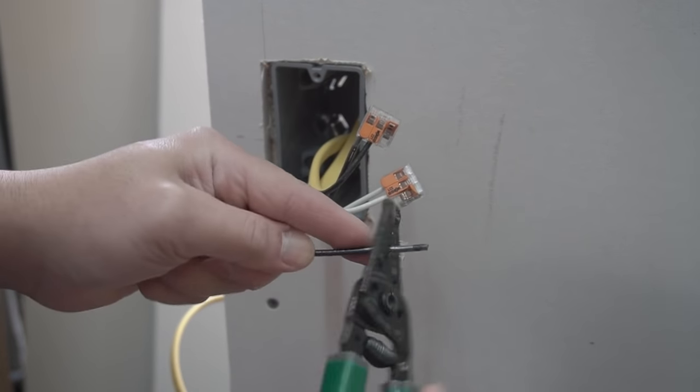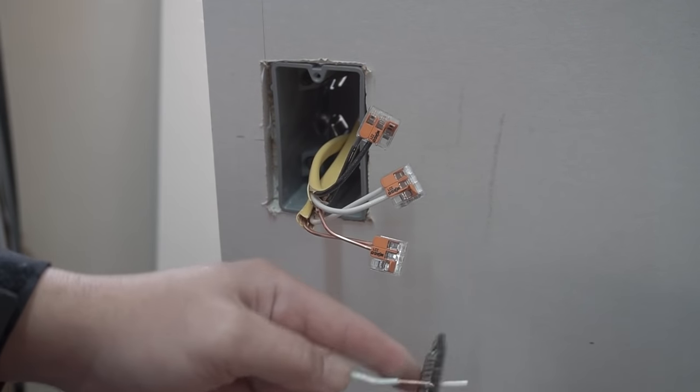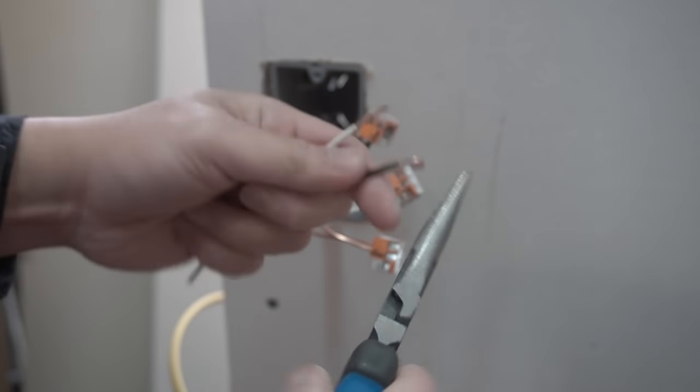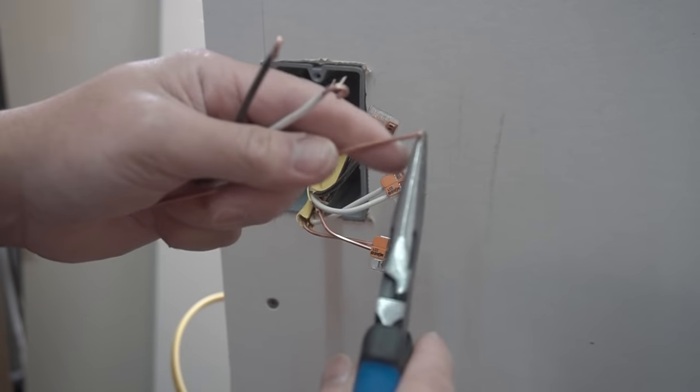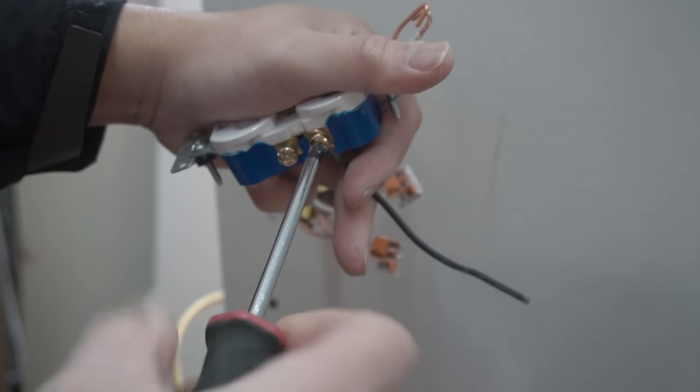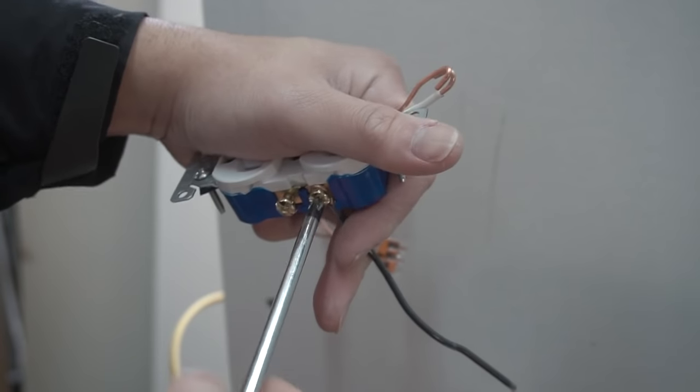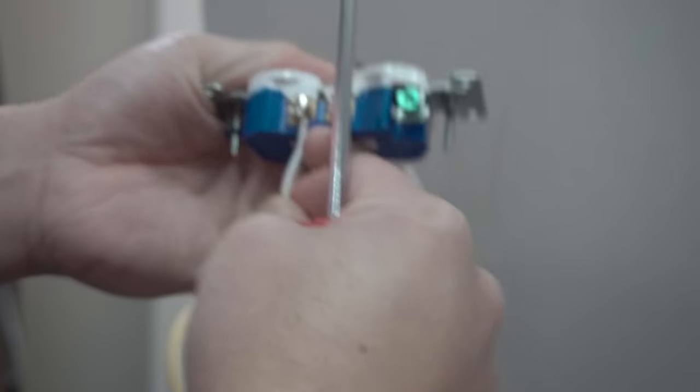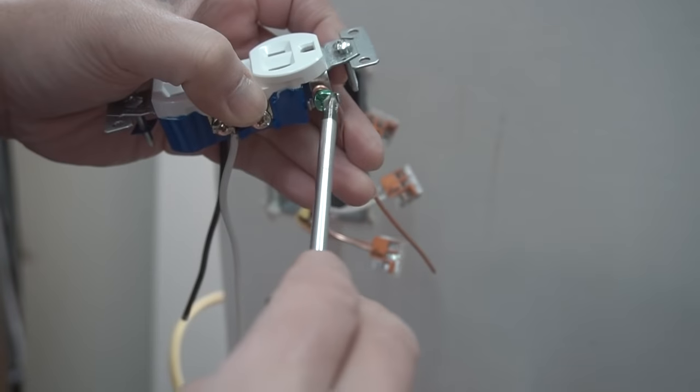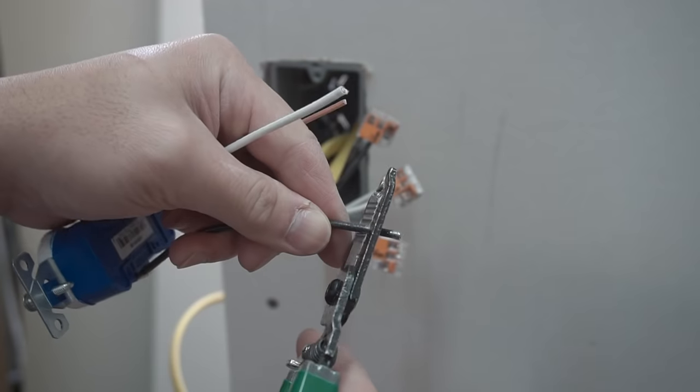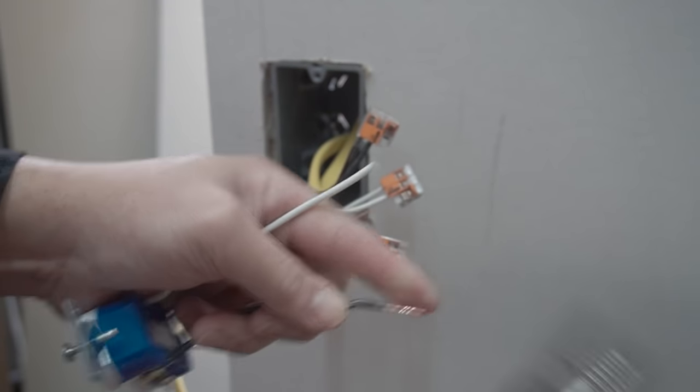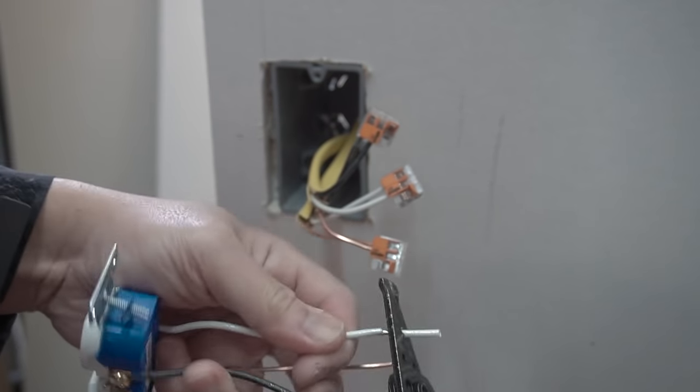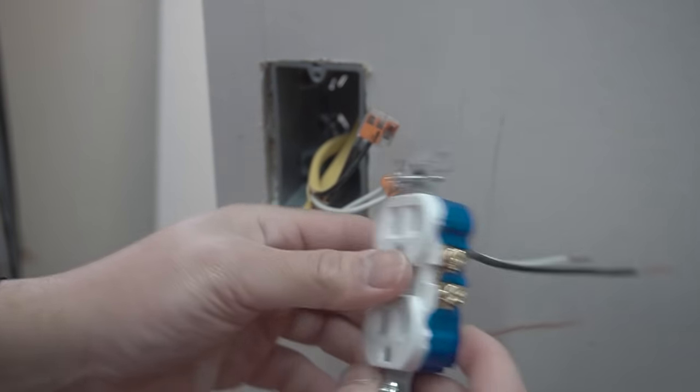Strip one end, even the amount, looks about the same size. Make those hooks. Same thing for the ground. Tighten that in place. Same thing for here, and again, five-eighths for the ground wire.